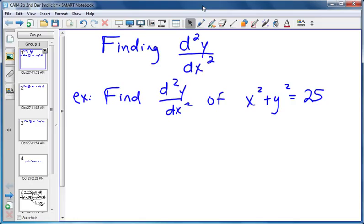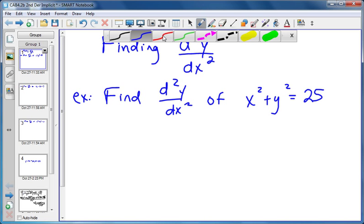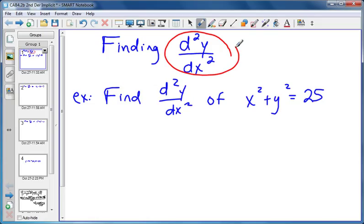This video explains how to find the second derivative using implicit differentiation. That's what this term right here means, the d squared y over dx squared - that is the second derivative. So it says find d squared y over dx squared, or find the second derivative of x squared plus y squared equals 25.